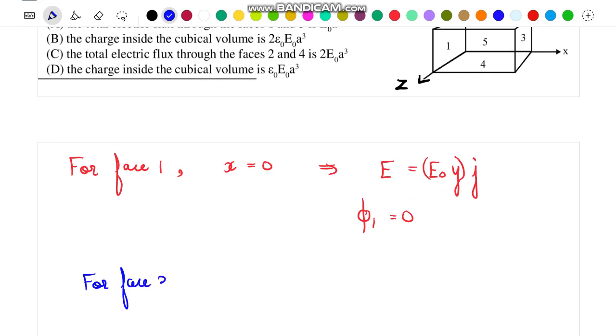For face 3, we can say that the x coordinate is equal to a. So the field will be equal to E₀a î plus E₀y ĵ. I have written this value from the expression of field already given to us in the problem.